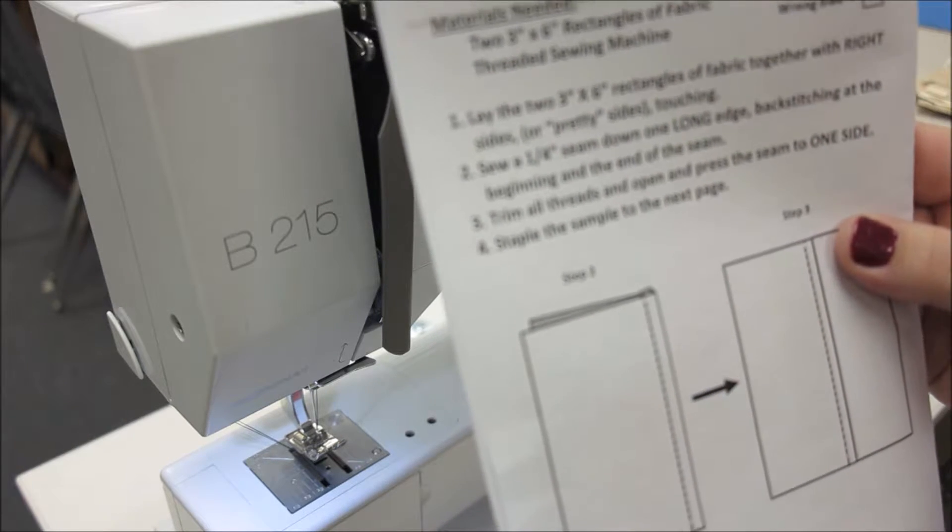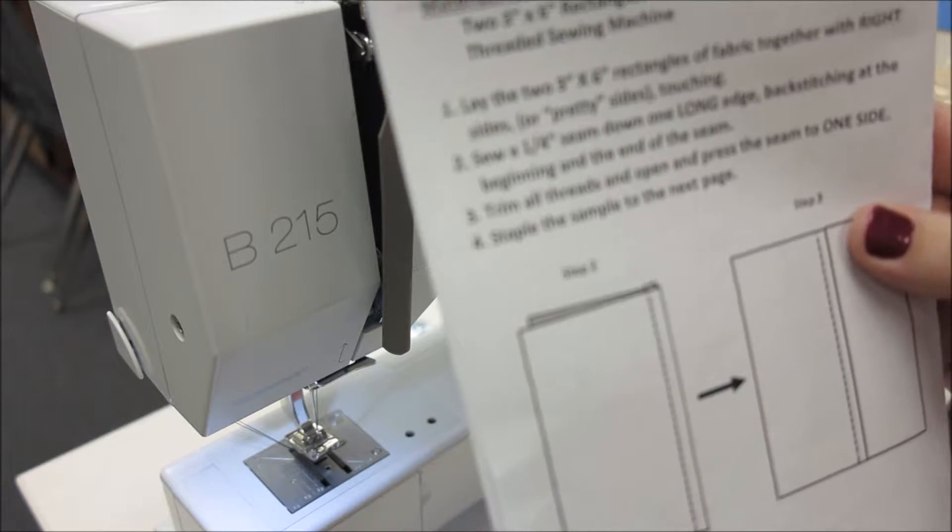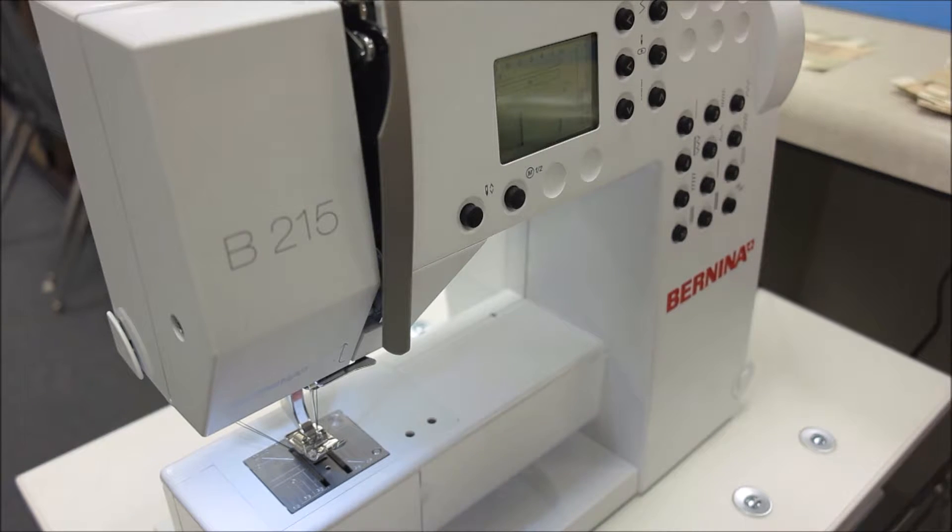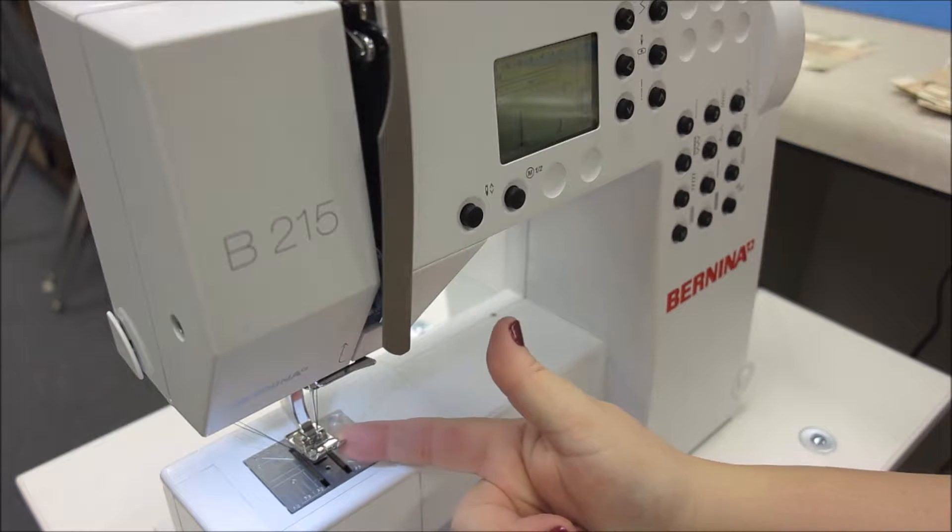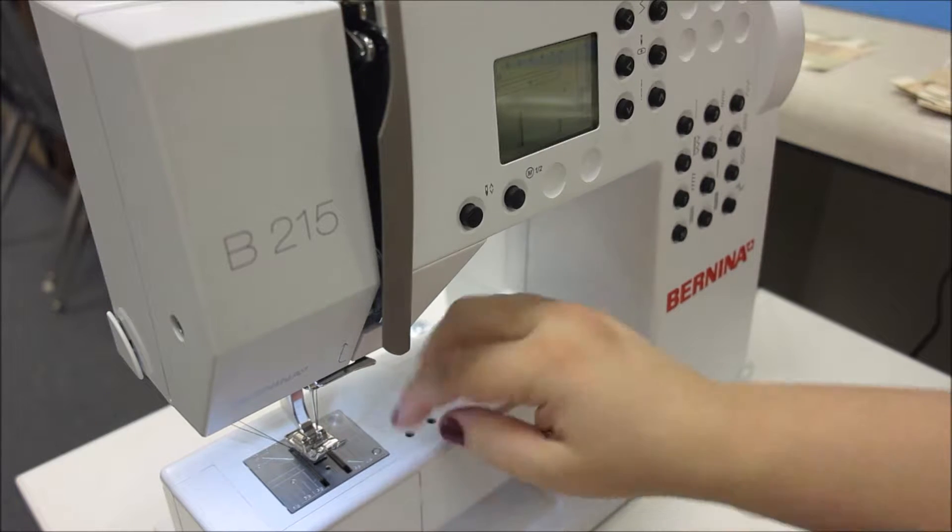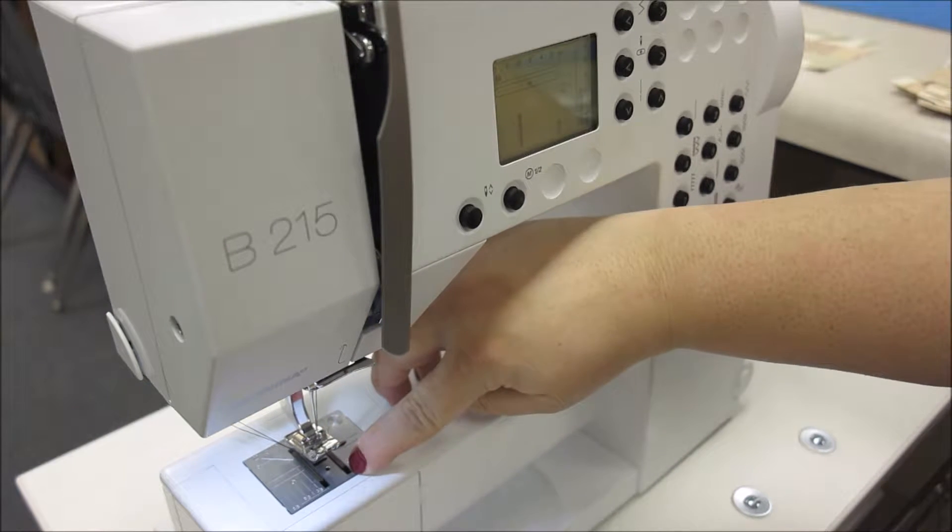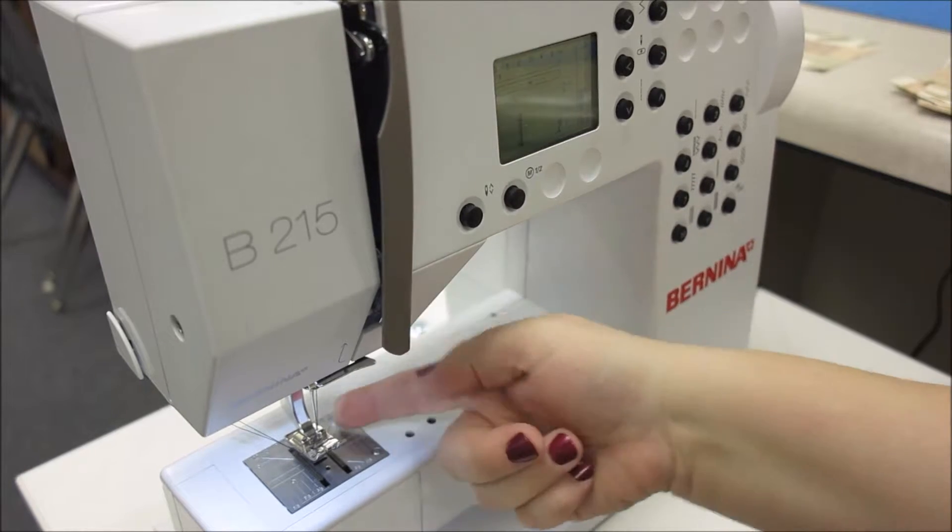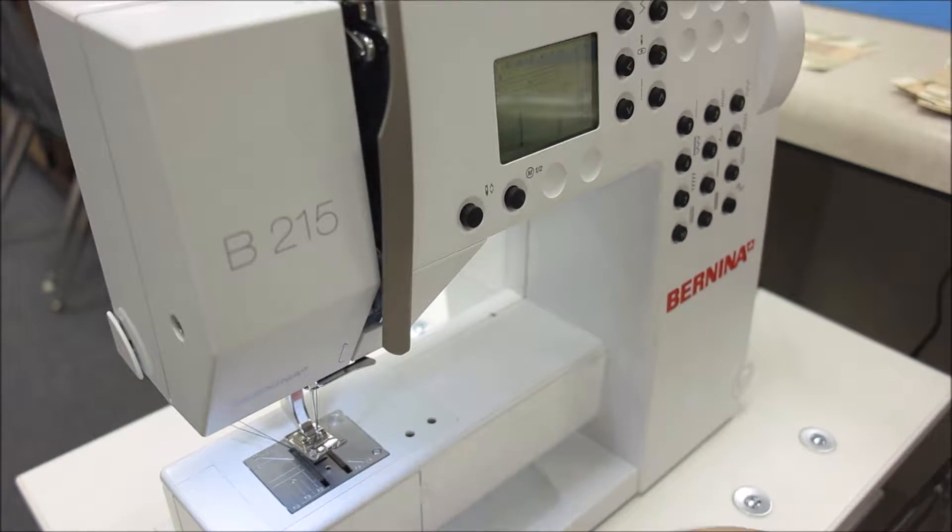sew a one-fourth inch seam down the long edge, backstitching at the beginning and the end. So I'm going to line this up. The one-fourth inch is the outside edge of the presser foot. There's also a tiny little line right here in front of the feed dogs, but the easiest way to follow it is the outside edge of the presser foot.